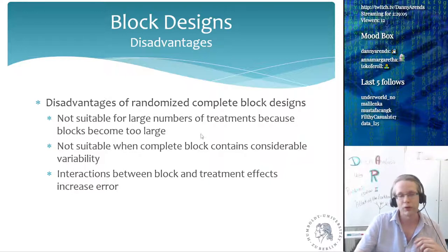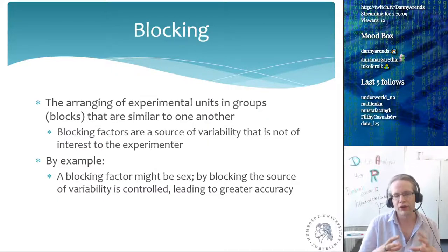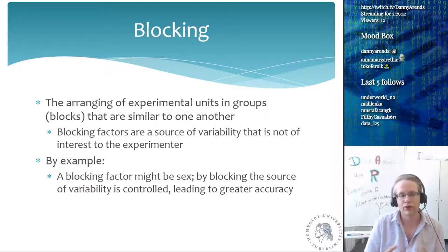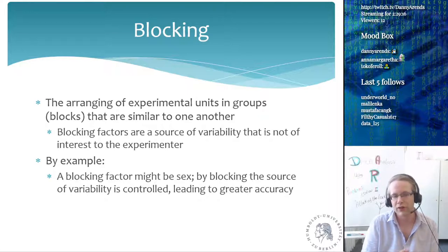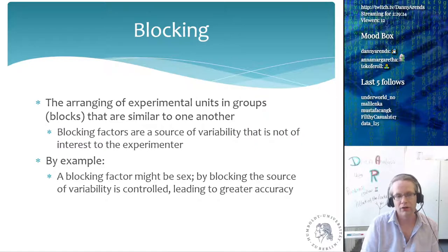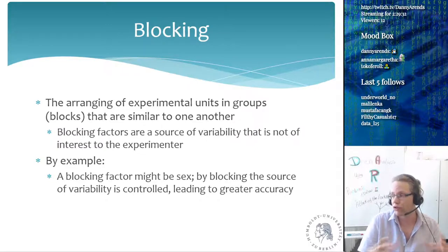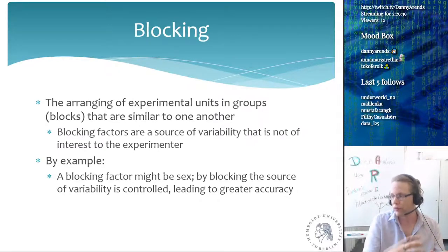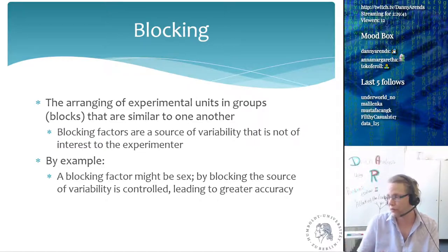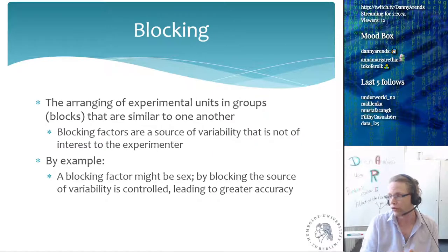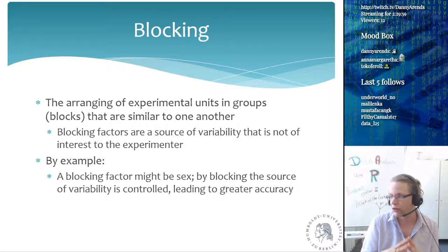Blocking is the arrangement of experimental units that are similar to one another, and the blocking factors are a source of variability not of interest to the experiment. We can't block the thing we're interested in. An example might be sex — males are different from females, so we block on sex by giving 50 out of 100 males a treatment and 50 the control, and similarly for 100 females. When we do the analysis, we treat sex as a blocking factor so the differences between males and females are captured by that factor.